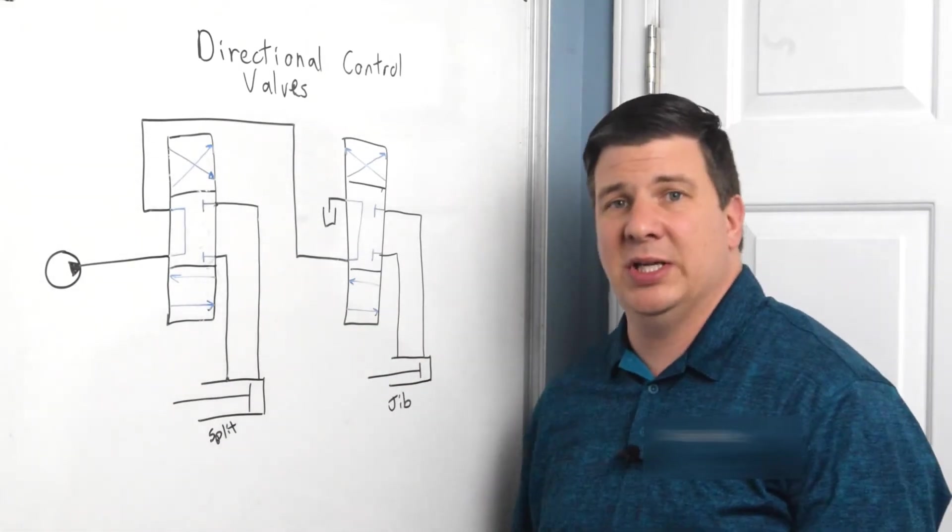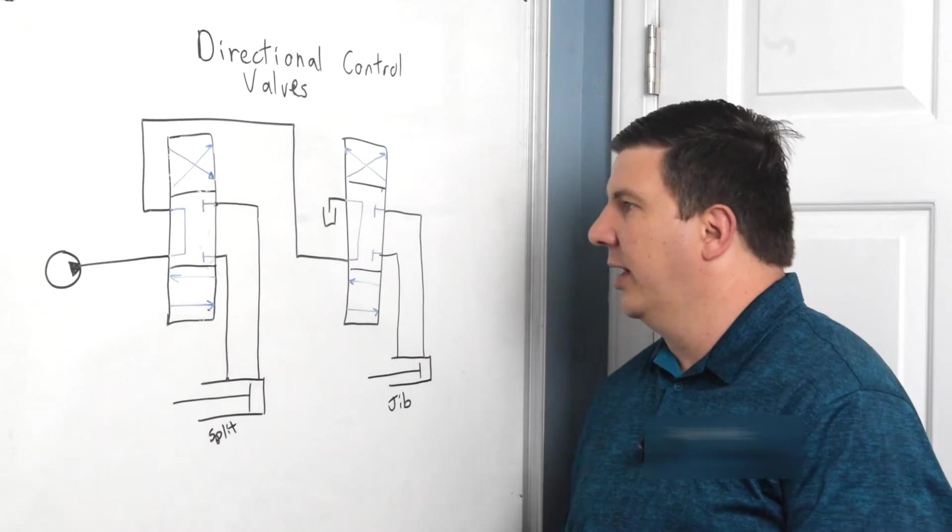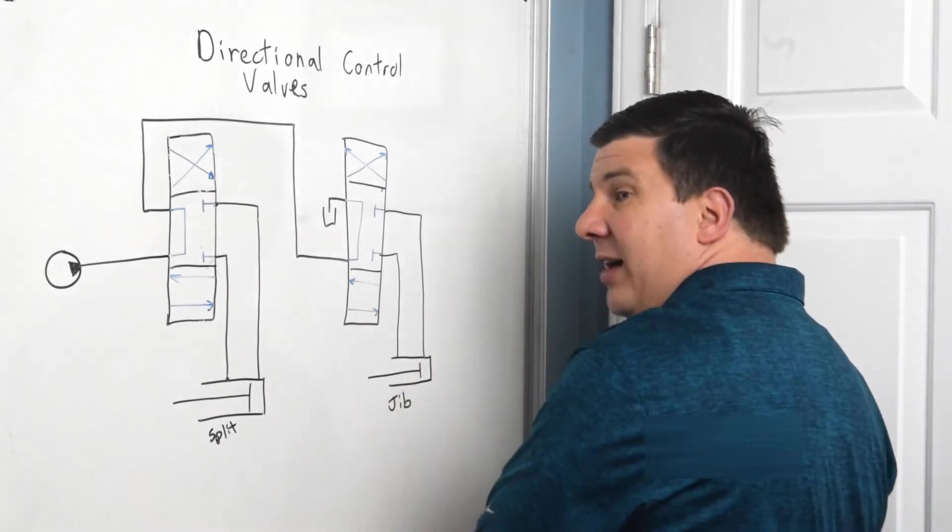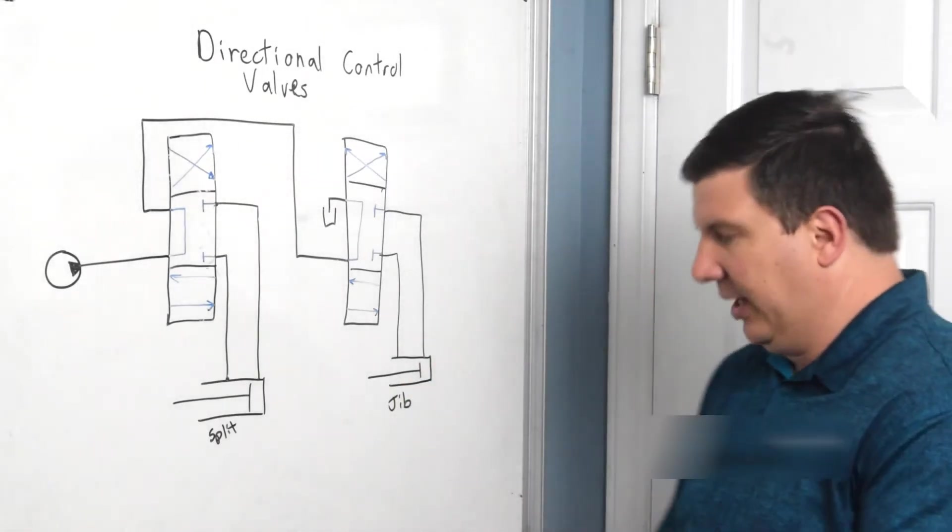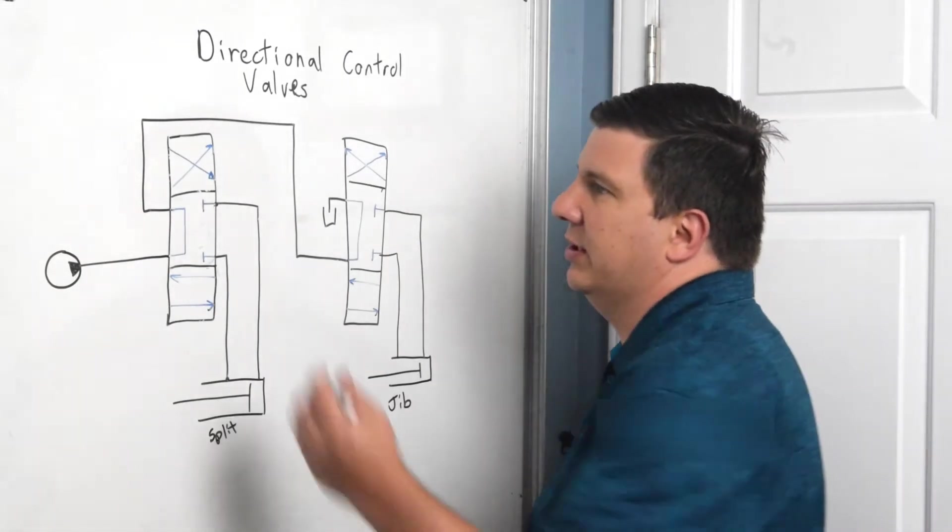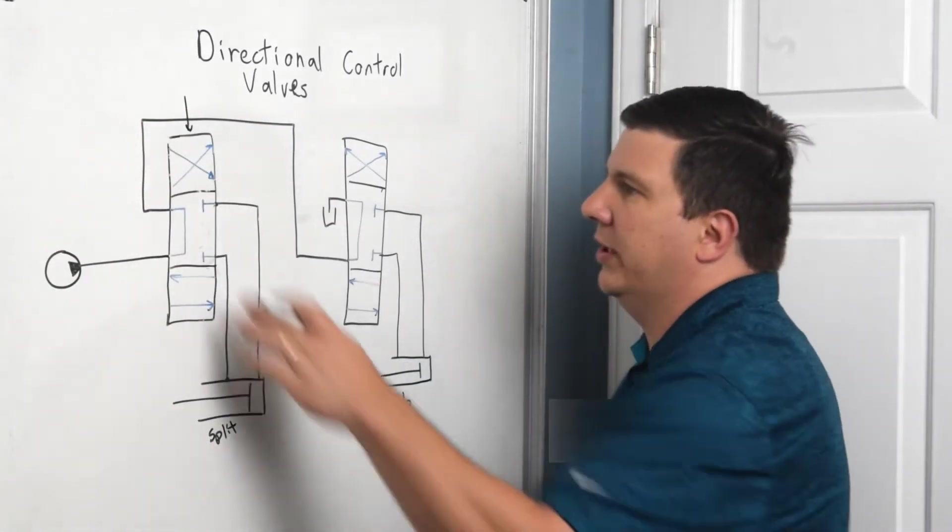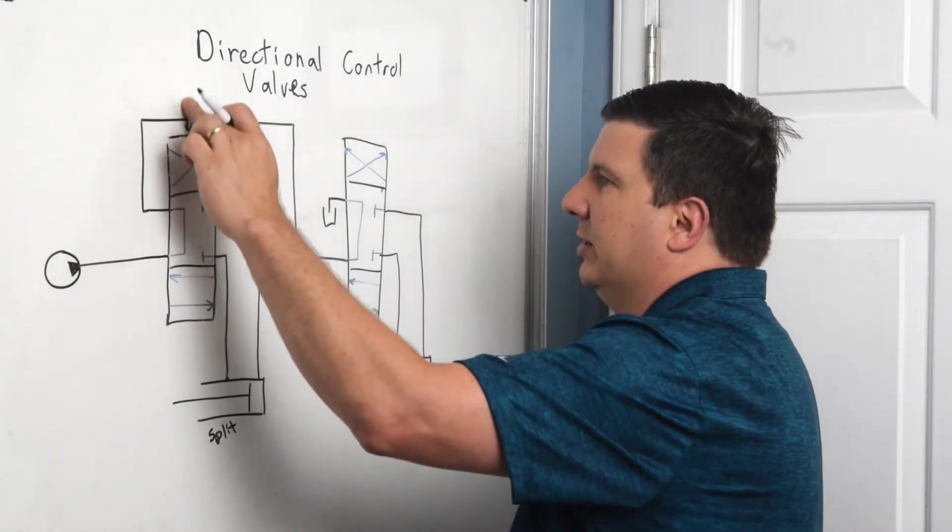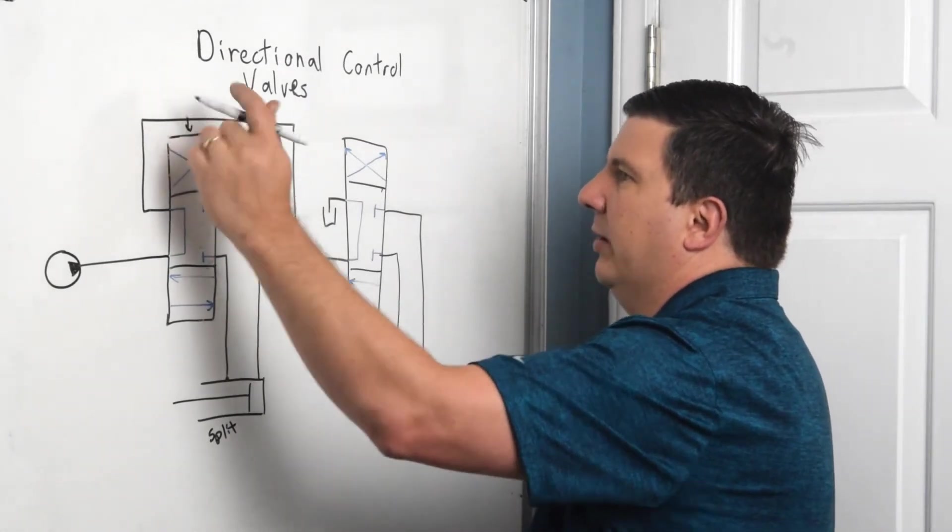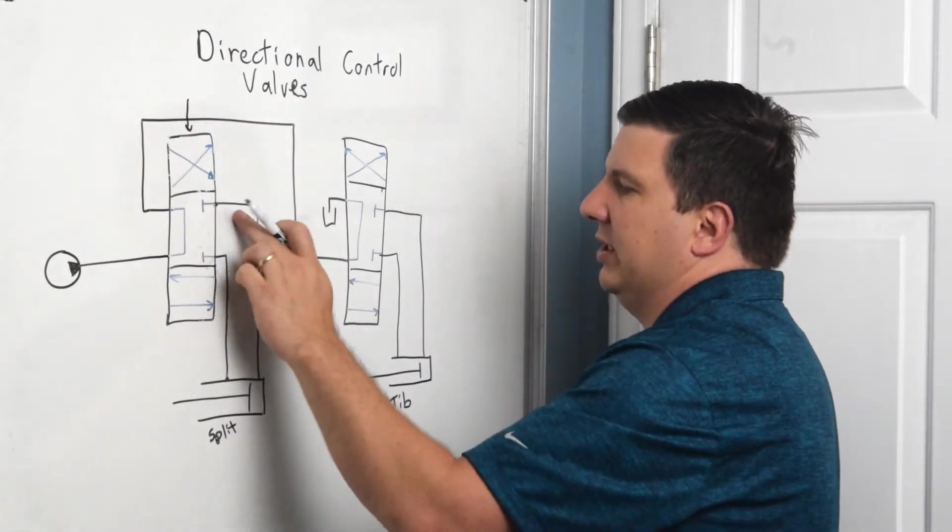So let me tell you why this would get a little wonky, especially if I'm doing this with four or five sections of stuff. So let's say I'm going to shift my valve down here so that I am pressurizing this line.